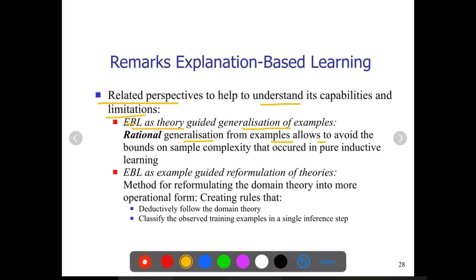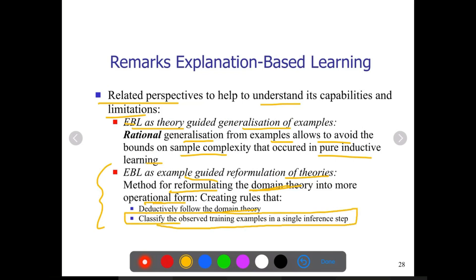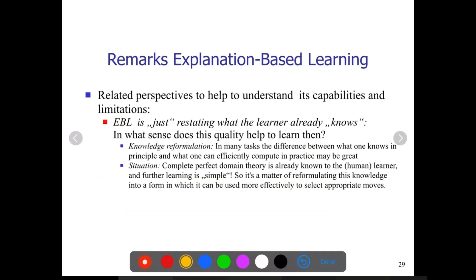Rational generalization of examples allows us to avoid sample complexity, which is pure inductive learning. It is a guided reformulation of theories — that is, reformulating the domain theory into a more operational form. EBL converts our domain into a more operational form and classifies the observed training examples in a single inference step. It doesn't need iterations or repeated computation; in a single step, EBL can reach the target concept.